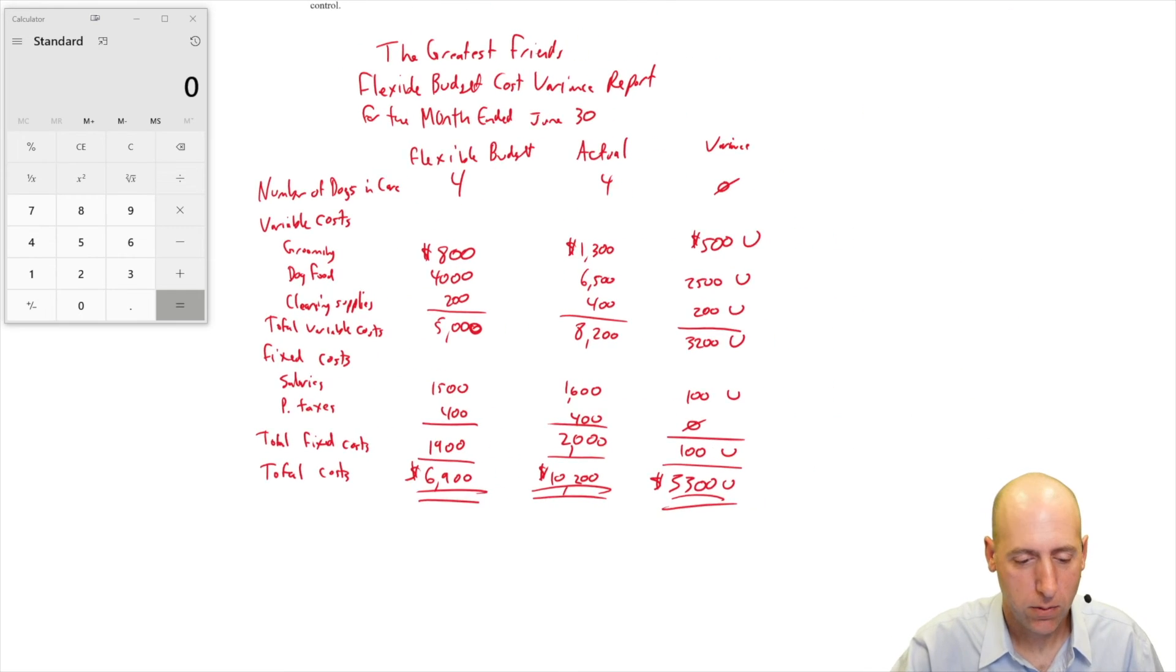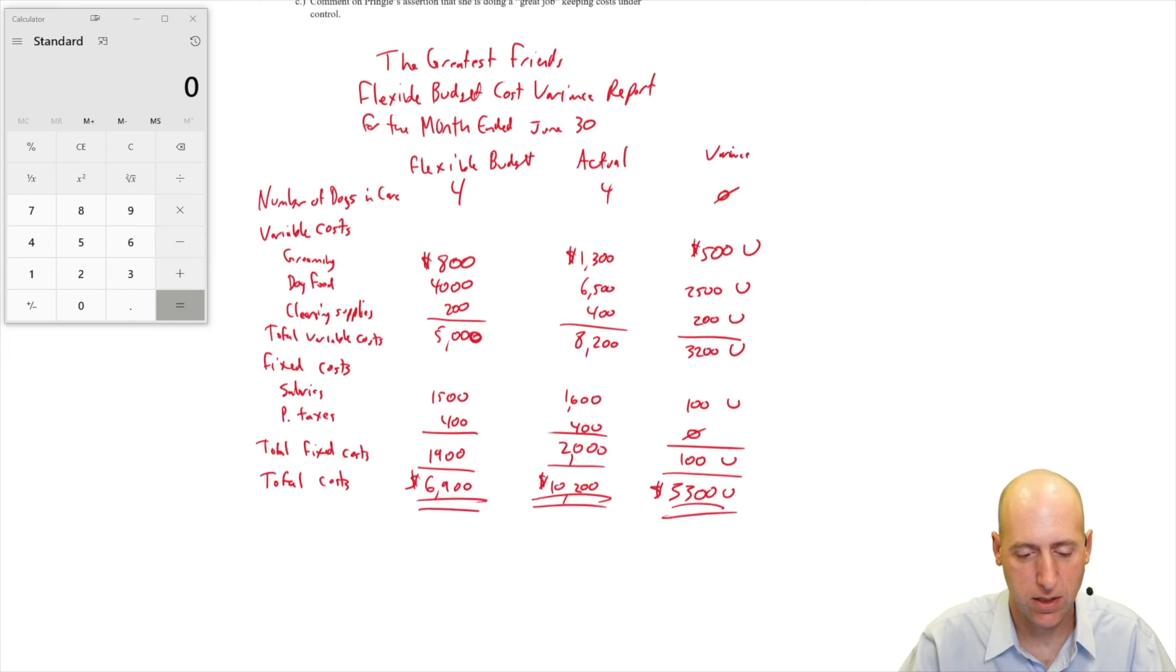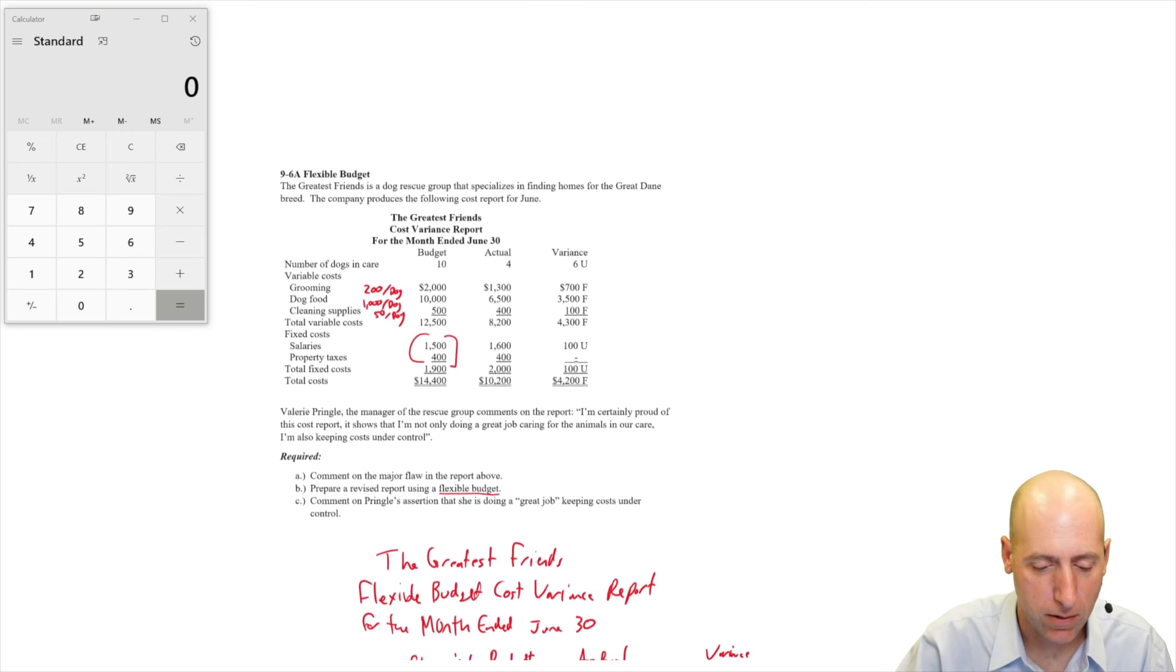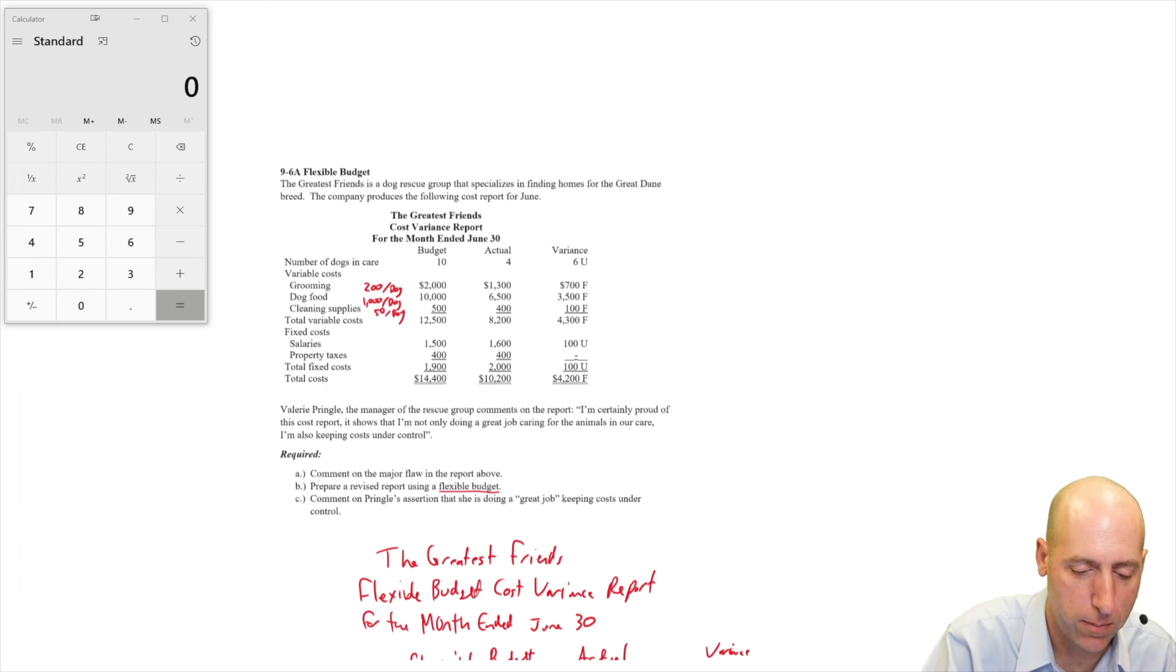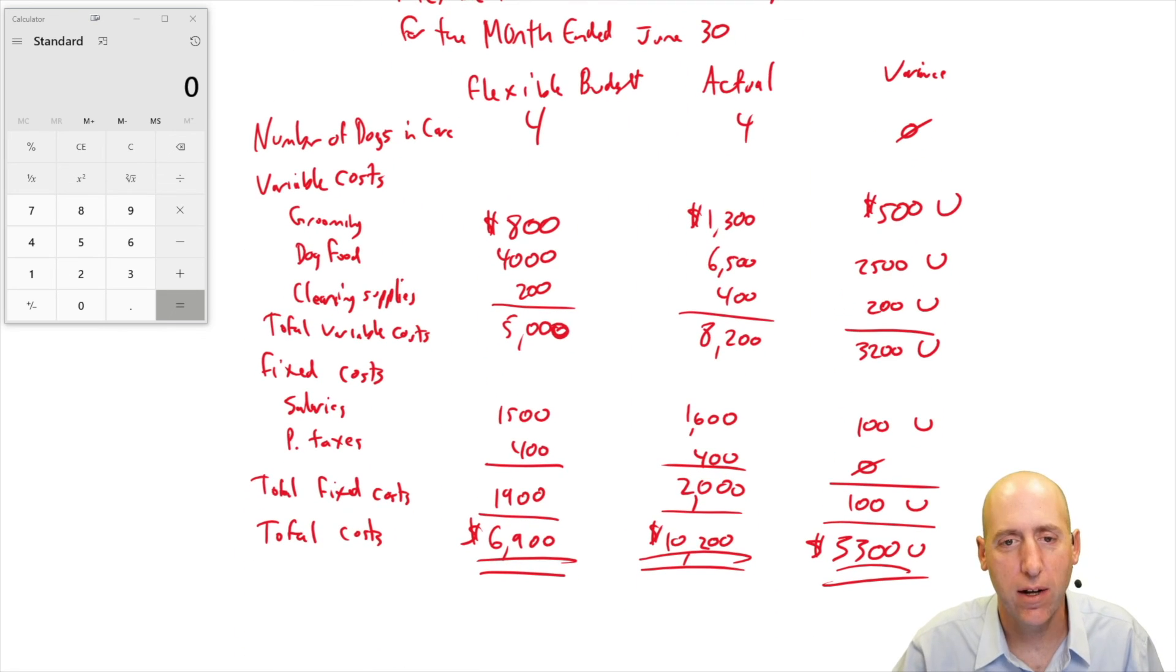We've answered part B. It says prepare a revised report using a flexible budget. This is the flexible budget. You just say, before the year, I prepared a budget. This is the budget we prepared before the month, based on 10 dogs in our care. Afterwards, if we can make an adjustment to the budget, what would our budget have looked like had I known then that we would only have four dogs in care? It would have looked like this. And sadly, that's bad news for Valerie. She didn't keep costs under control.